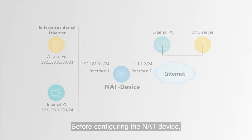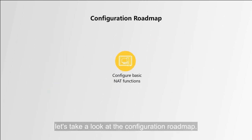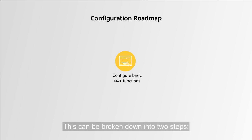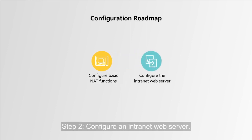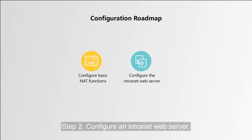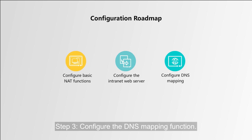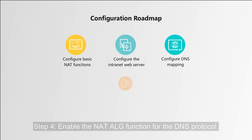Before configuring the NITE device, let's take a look at the configuration roadmap. Step 1: Configure basic NITE functions. This can be broken down into two steps: 1. Create a simplified NITE instance. 2. Configure a NITE public address pool. Step 2: Configure an internet web server. Step 3: Configure the DNS mapping function. Step 4: Enable the NITE ALG function for the DNS protocol.